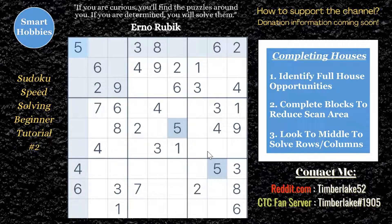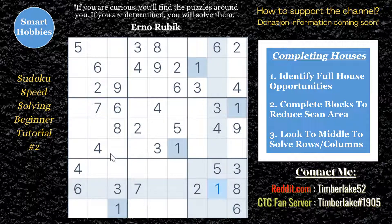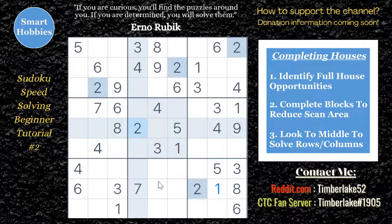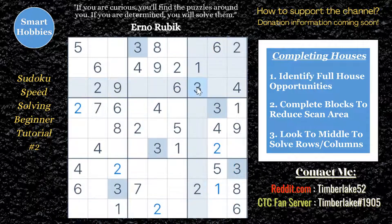Hopefully, between watching videos one and two, you're able to practice the ordinal solving method. Now we're going to build upon that by looking for these full houses, which will help solve the puzzle a little bit quicker. Let's start with our ordinal solving method, and whenever I see a full house, I'll fill it in. If you can start training your mind and eyes to see the full houses, it'll make for a much quicker solving experience.